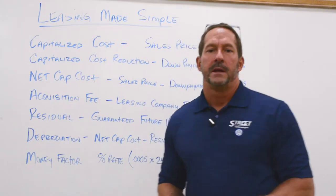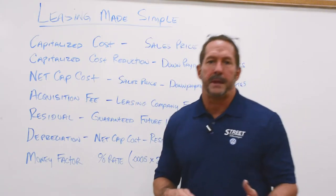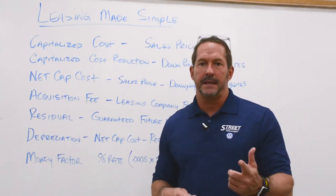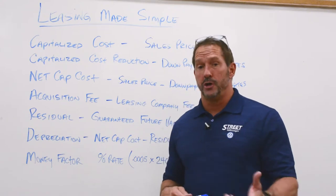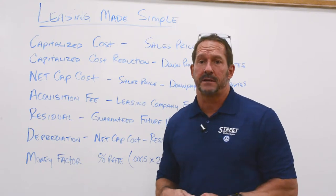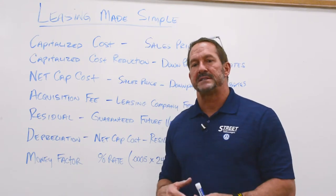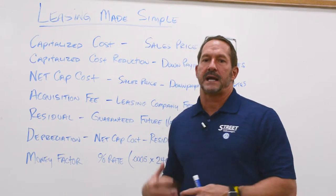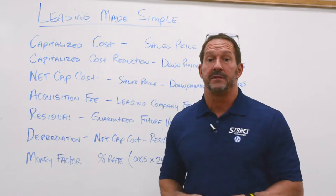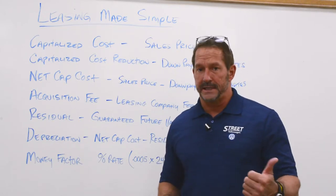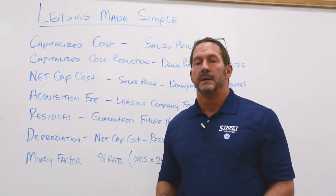Let's start off here. There are two people on the lease contract. The lessee, which is you, the person leasing the vehicle, and the lessor, that's the company that is actually leasing the vehicle to you. So the lessee is you, the lessor is basically the bank.